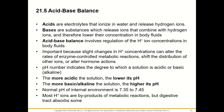Acids are electrolytes that ionize in water and release hydrogen ions. Bases are substances which release ions that combine with hydrogen ions, lowering their concentration in body fluids. The acid-base balance involves regulation of hydrogen ion concentrations in body fluids — slight changes can alter rates of enzyme-controlled metabolic reactions, shift distribution of other ions, or alter hormone actions. pH indicates the degree to which a solution is acidic or basic (alkaline). The normal pH of the internal environment is 7.35 to 7.45.